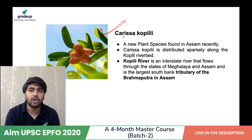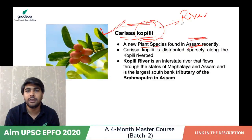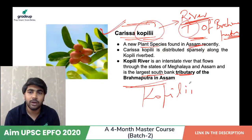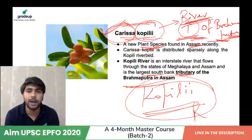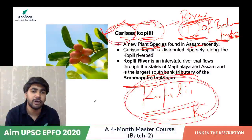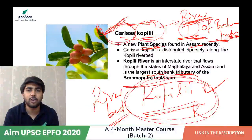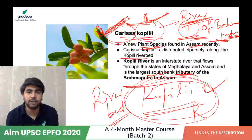Carissa Copili is a new plant species found in Assam. Copili is a river — the largest south-bank tributary of the Brahmaputra. The plant species Carissa Copili was found in the river bed of the Copili river, which is how it got its name. It is distributed sparsely along the river bed of Copili river. A helpful memory technique is to remember the river name Copili, in whose river bed this plant is found.